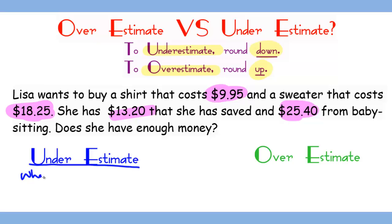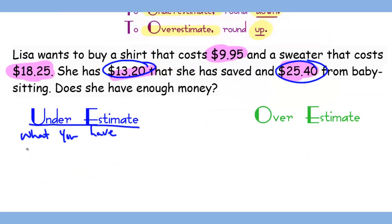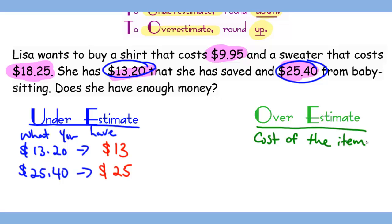In this question, you want to underestimate what you have, which is the $13.20 and $25.40. Round $13.20 to $13 and $25.40 to $25 to make sure you have enough by rounding down. You want to overestimate the cost of the items, which are $9.95 and $18.25.